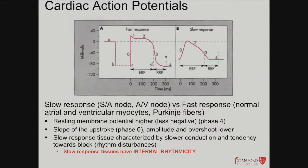We have slow response fibers and fast response fibers. The main thing to take away is that the slow response fibers are generally the pacemakers of the heart. The fast response fibers — like normal ventricular muscle cells — contract really fast once they get the impulse. The pacemaker is the one that determines the rate, and that's slower. So slow equals pacemaker, fast equals non-pacemaker.